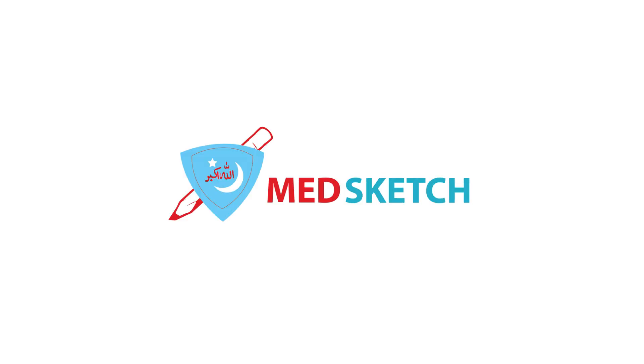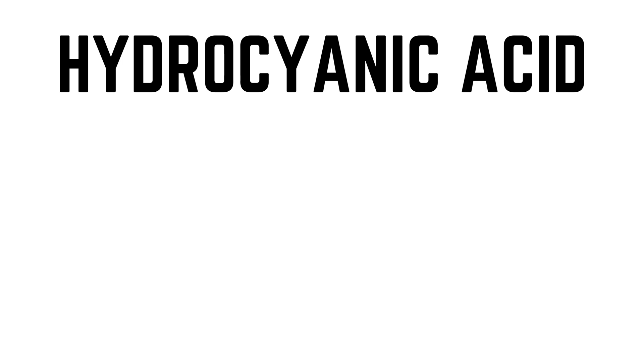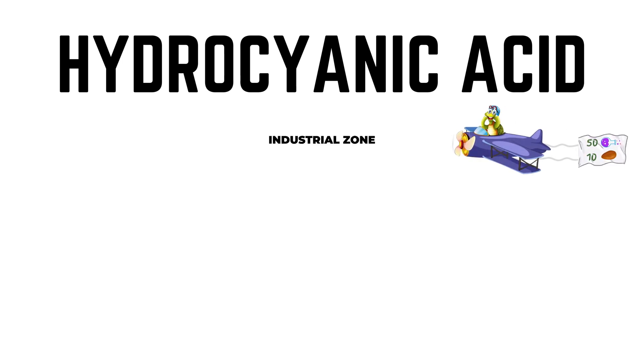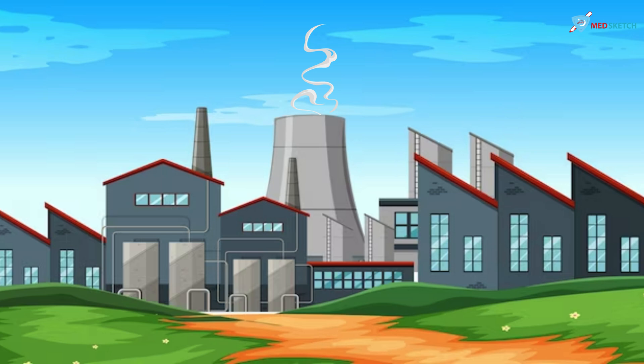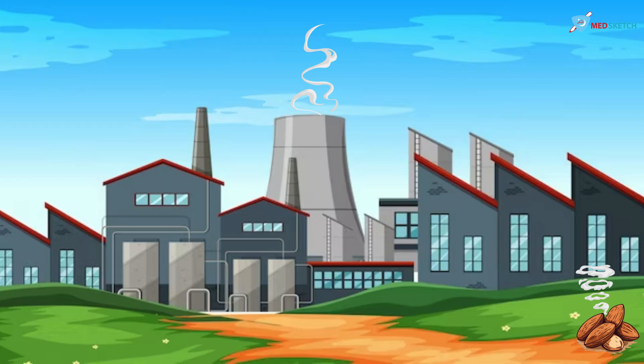Welcome to Medsketch. The toxin of the day is hydrocyanic acid. For ease, we have named the scene as the industrial zone. On the right side of the scene you can see a few almonds present on the ground. These almonds are emitting some volatile fumes. Basically, the solution of hydrocyanic acid is colorless, volatile, and smells like bitter almonds.